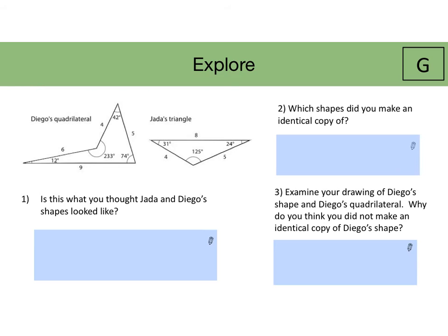Now students are going to see what Diego's quadrilateral and Jada's triangle look like. Some of your students might be surprised and many of them might say that they did not expect Jada's and Diego's shapes to look like that. Or they might say we expected Jada's triangle to look like that, but not Diego's quadrilateral. Here for number two, which shapes did you make an identical copy of? It is possible that they made an identical copy of Jada's triangle, but possibly not for Diego's quadrilateral.